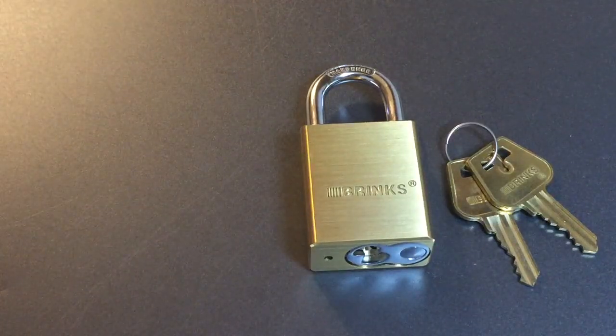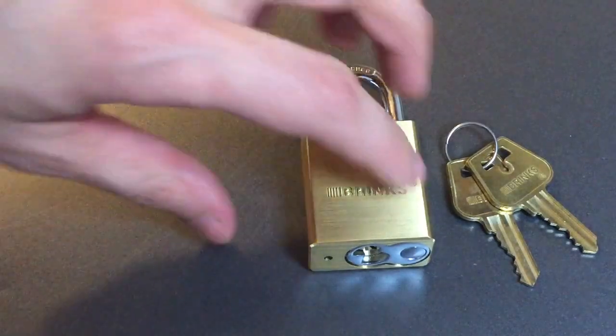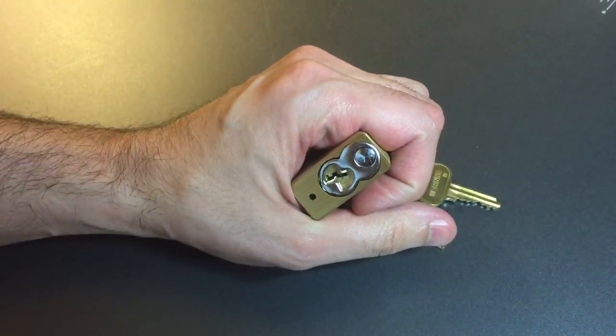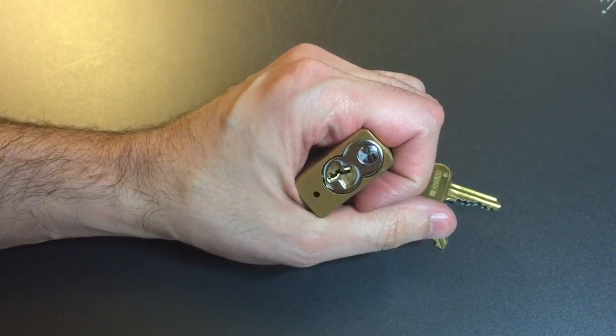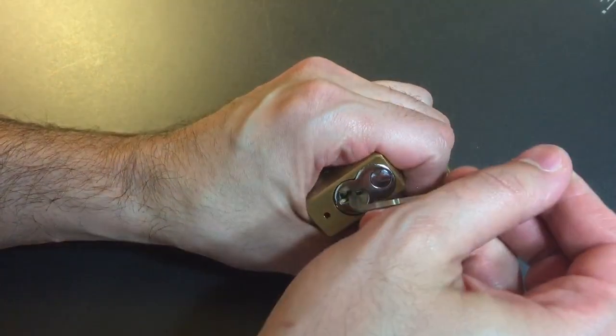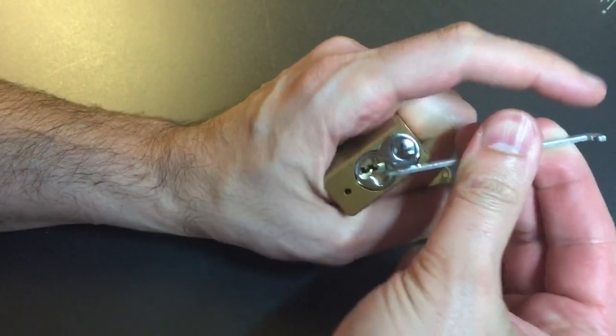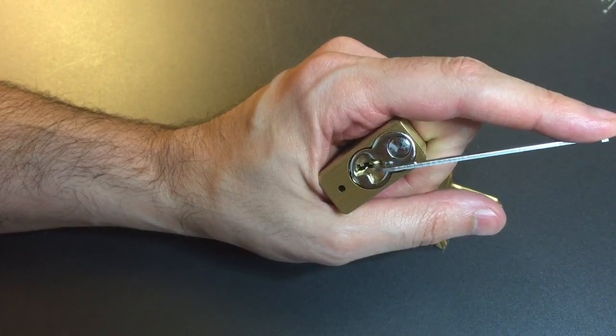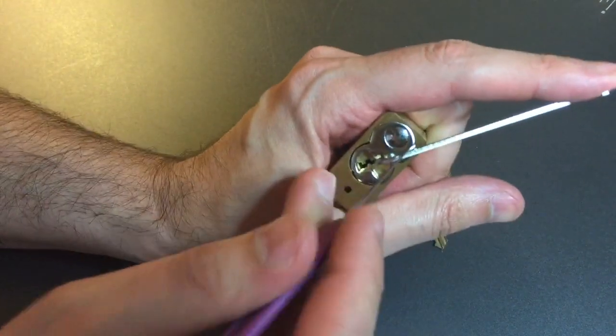We're going to see how hard it is to pick this Brinks open and then I'll take it apart and show you what's inside. We're going to use a standard hook I think in 18,000. Okay let's get started.